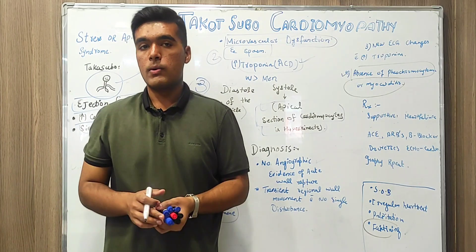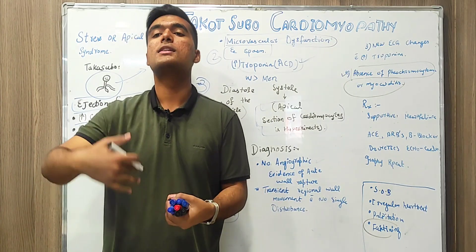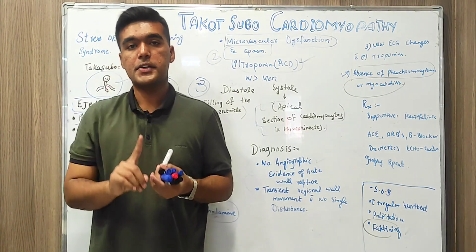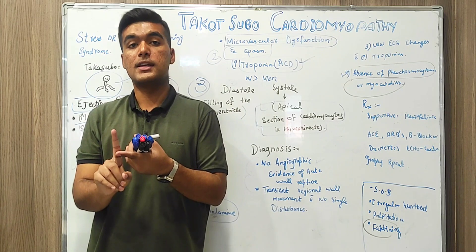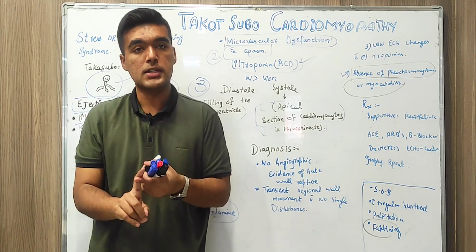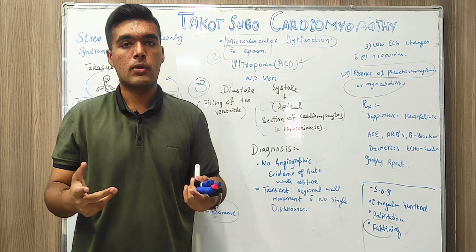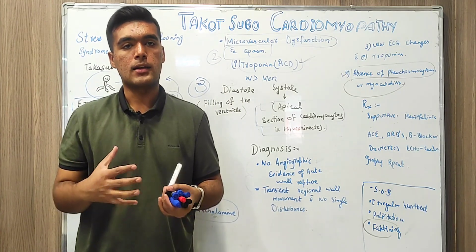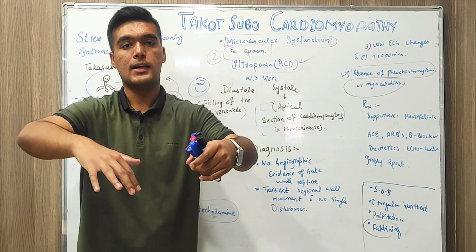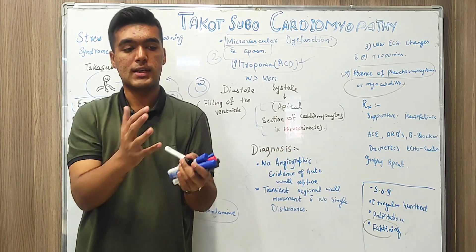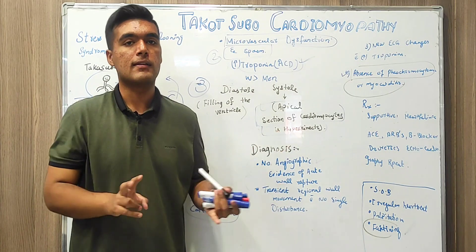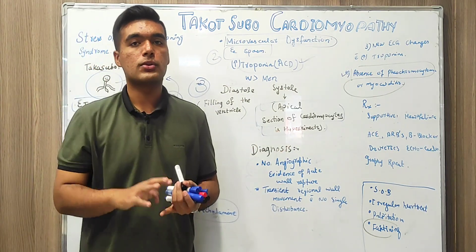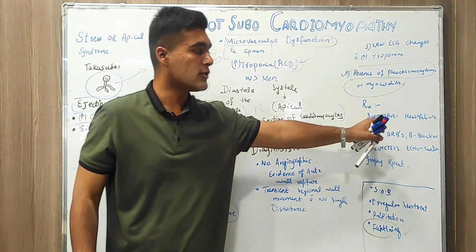Now we will diagnose it, now we have to move towards the treatment of this condition. First line treatment is supportive. As we earlier discussed that it is relevant to stress, we have to educate the patient on how to cope with stress and we also have to educate the surroundings to provide a stress-free environment to reduce troponin level as well as those hyperkinetic disturbances which are occurring.